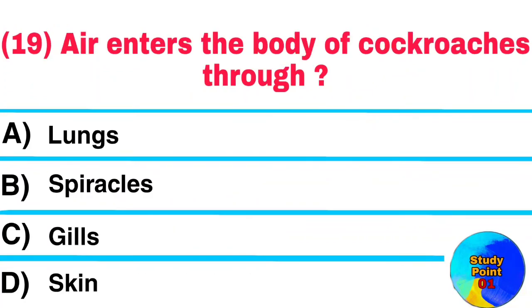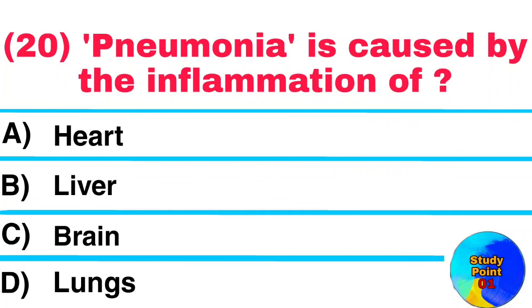Question No. 19. Air enters the body of cockroaches through? Answer: Spiracles. Question No. 20. Pneumonia is caused by the inflammation of? Answer: Lungs.